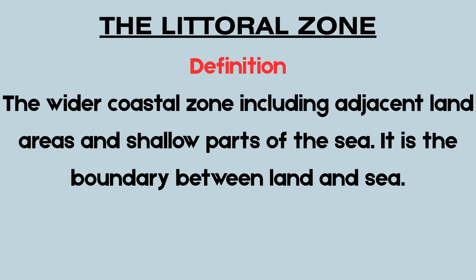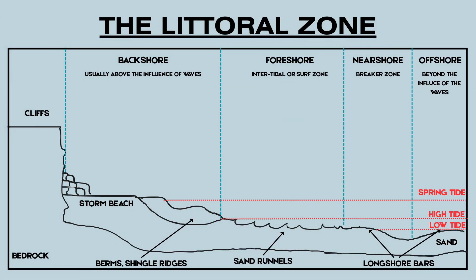The littoral zone is the wider coastal zone including adjacent land areas and shallow parts of the sea. It is the boundary between land and sea. To help explain this term in detail, let's look at a diagram and explain each section of the zone. The littoral zone is divided into four main sections: backshore, foreshore, nearshore, and offshore.